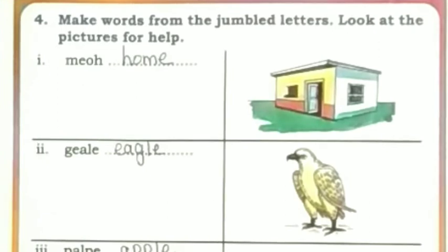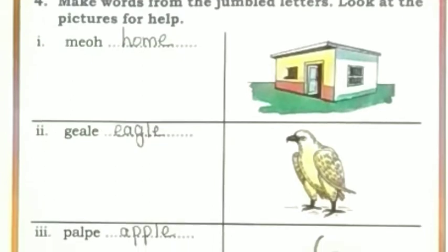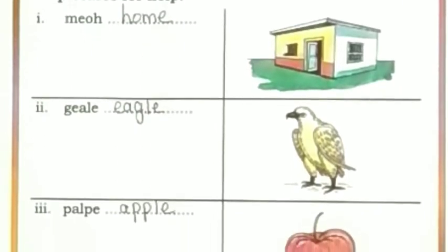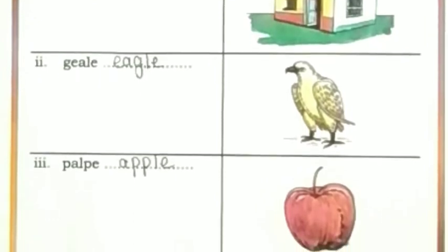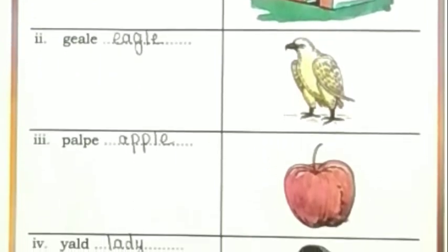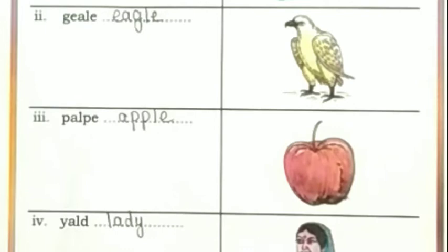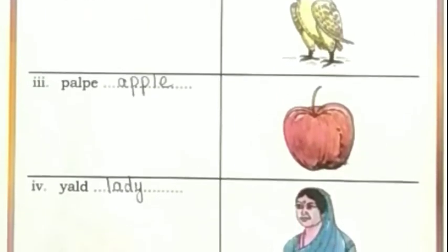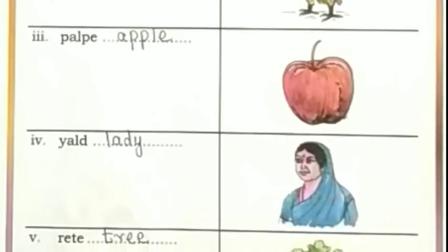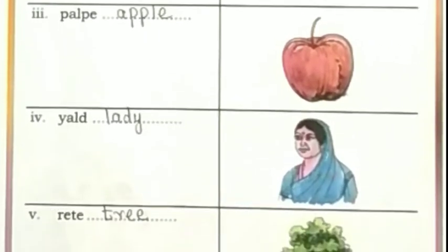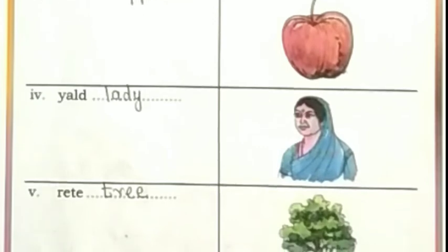Children, make words from the jumbled letters. Look at the pictures for help. H-O-M-E, home. E-A-G-L-E, eagle. A-P-P-L-E, apple. L-A-D-Y, lady. T-R-E-E, tree.